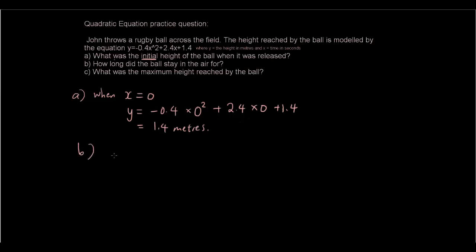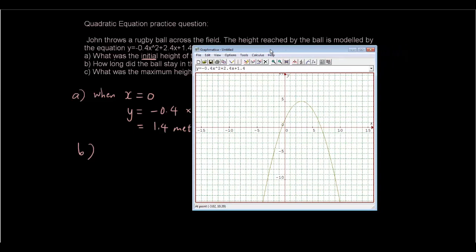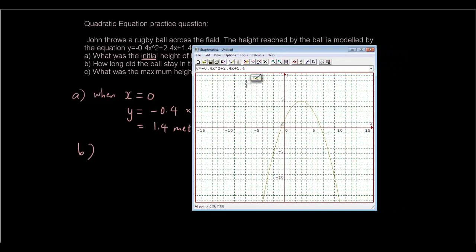Question B. How long did the ball stay in the air for? Well, firstly I will illustrate to you the answer using graphmatica. And you can see here that this is the graph of the equation y equals negative 0.4x squared plus 2.4x plus 1.4. Here is the line representing the y axis represents the height of the ball and the x axis represents the time in seconds. And you can see that initially the height of the ball is 1.4.